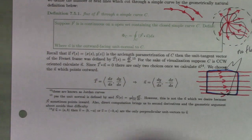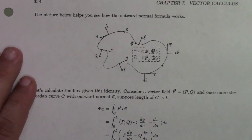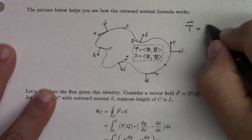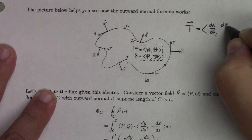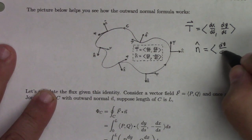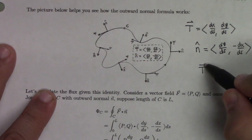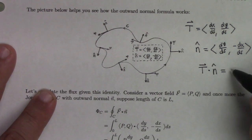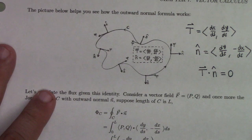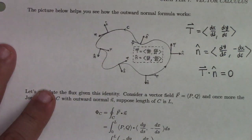Let me zoom in to check another case to convince ourselves this is geometrically reasonable. Over here, the unit tangent has a little negative dy/ds and a lot of positive dx/ds. The n-hat points a lot to the right, which is the dy/ds component, and the y-component of n-hat is minus dx/ds, going down. So that's a reasonable geometric setup for the outward pointing normal.